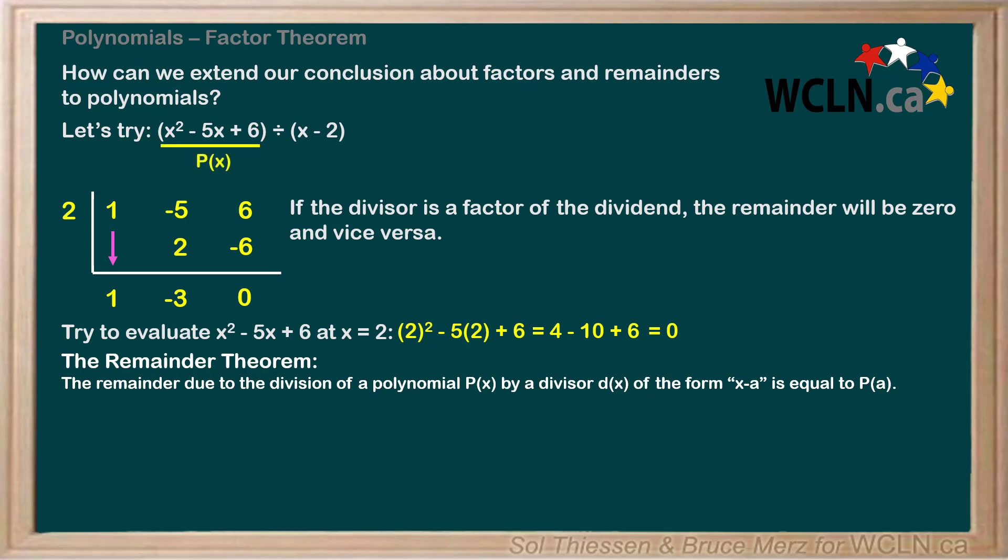In this case, p of x is x squared minus 5x plus 6, and d of x is x minus 2, with the a value being 2. Okay, humor me a little longer here before I get to the punchline of this video, which is the factor theorem.